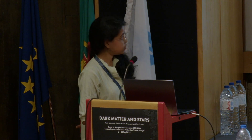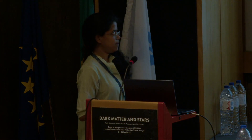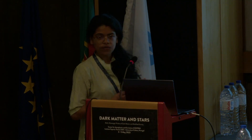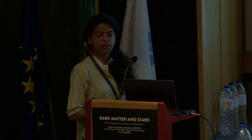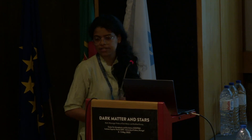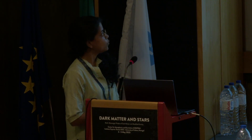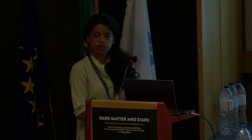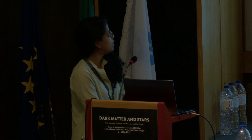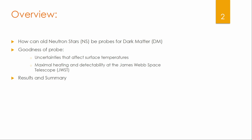Here's an overview of my talk. I'll begin with a brief overview of how we use old neutron stars as probes for dark matter, since this has been discussed by earlier speakers. I'll then discuss the main part of the project: a study of the goodness of using old neutron stars and their heating as a probe for dark matter via an uncertainty analysis that affects these temperatures, and I'll discuss their detectability at the James Webb Space Telescope and summarize.